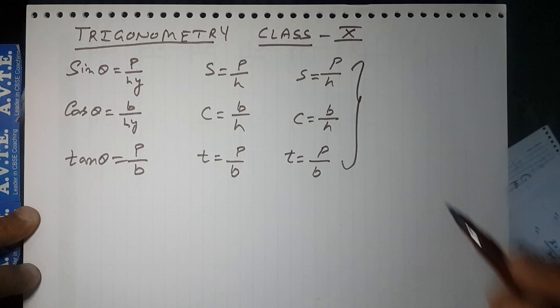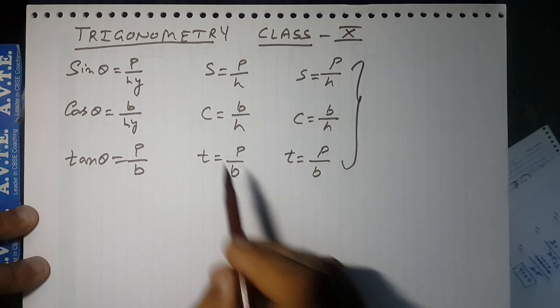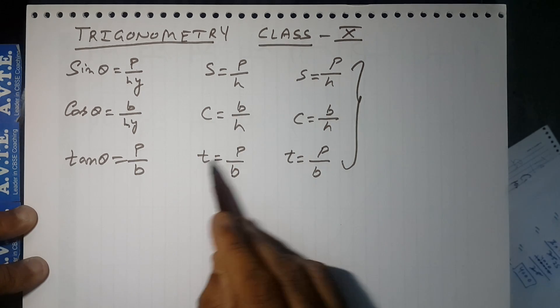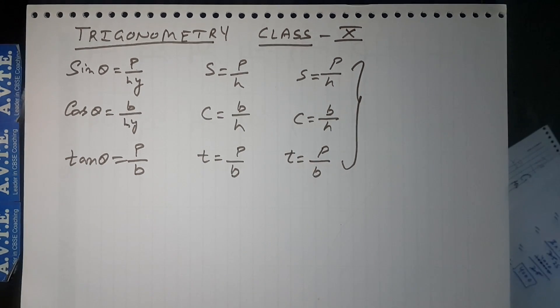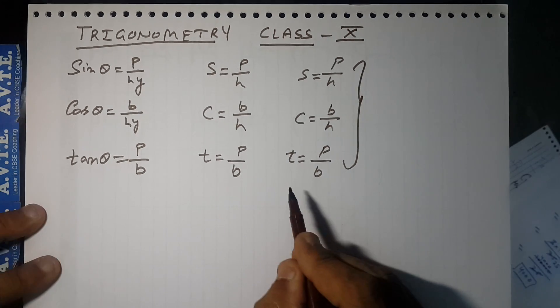So these are three formulas. Some people have curly brown hair turned permanently black means sin θ equals perpendicular upon hypotenuse, cos θ equals base upon hypotenuse, and tan θ equals perpendicular upon base. You can also remember this.